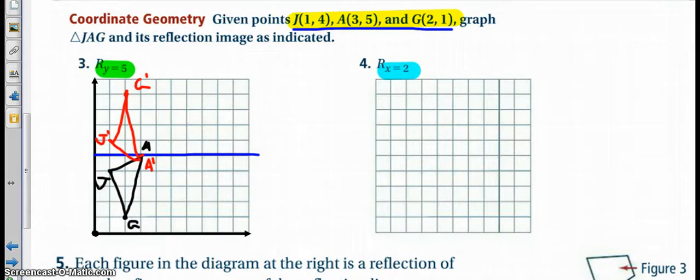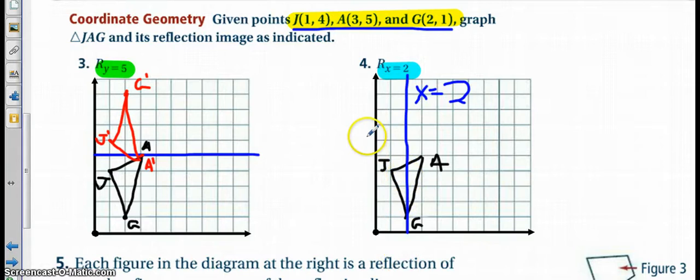If you have not done so, try number four. So here's my line x equals 2. We can see it cuts right through the middle of my shape, which is perfectly fine because then when I go to reflect those points, a is one to the right, so it goes one to the left.